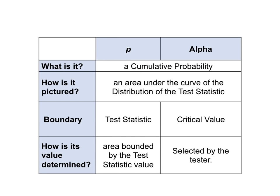Here is the compare and contrast table for P and alpha. First of all, both are the same kind of thing: cumulative probabilities. They are both pictured as areas under the curve of the distribution of the test statistic. The test statistic value is calculated first and forms the boundary which defines P. When a value for alpha is selected, it is plotted as a shaded area under the curve and the critical value is calculated to be its boundary.